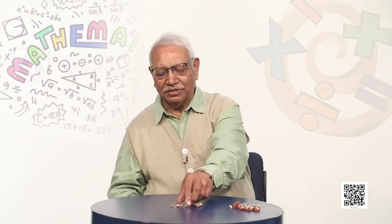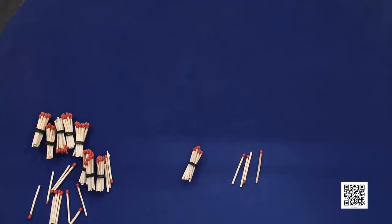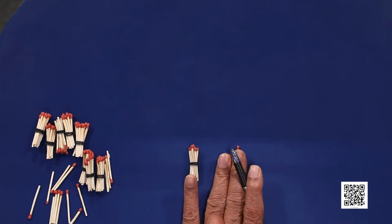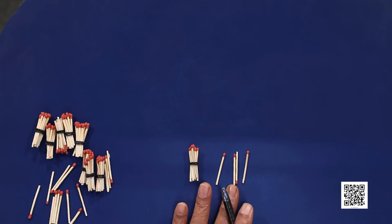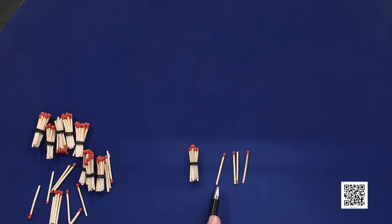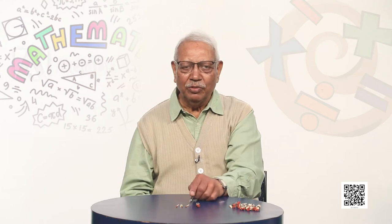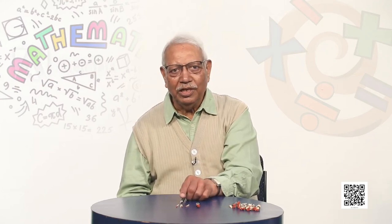Suppose I remove some sticks here, and now I ask you again: how many sticks are there now? You will look at individual sticks — 1, 2, 3, 4 — and there is a bundle of 10 sticks also. So we will say 10, 11, 12, 13, 14. In answer to the question how many, we will say there are 14 sticks.